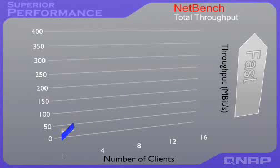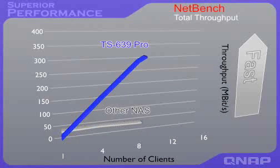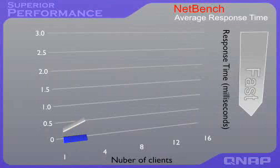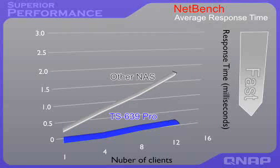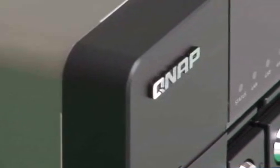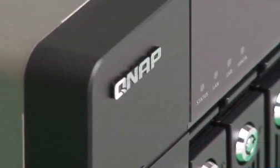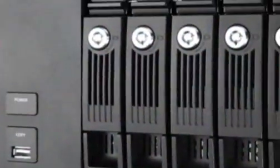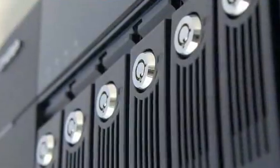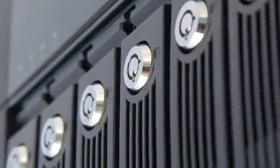NetBench test results show that the TS-639 PRO is able to deliver over 390 Mbps when serving 16 clients, with an average response time much faster than other NAS models at the same level. The TS-639 PRO Turbo NAS is the most reliable and secure network storage solution for your business environment.